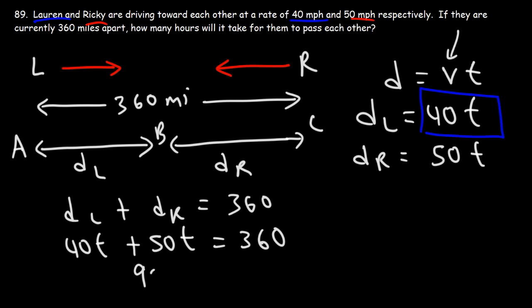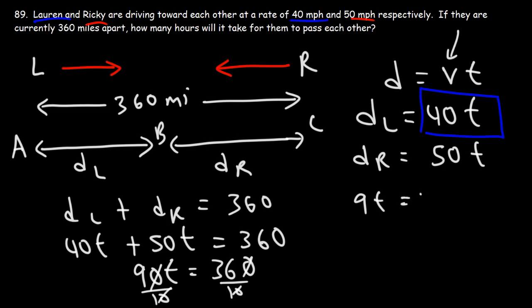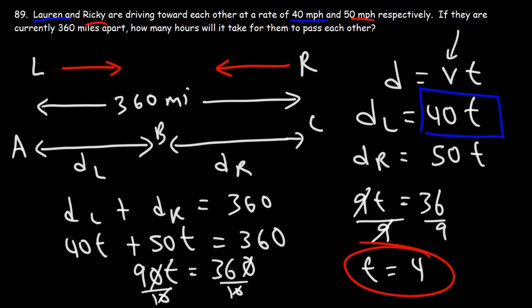Replacing DL with 40T and DR with 50T, we can now calculate T. So 40 plus 50 is 90. Dividing both sides by 10, we can cancel a zero, so we have 9T equals 36. Dividing both sides by 9, we see that T is 4. So it's going to take 4 hours for Lauren to pass Ricky — they're going to meet up at some point 4 hours later. That's the answer for this problem.